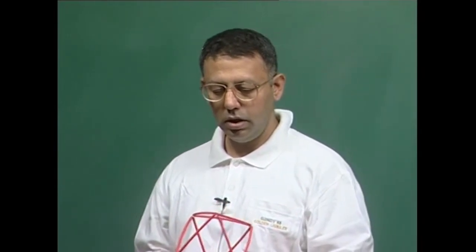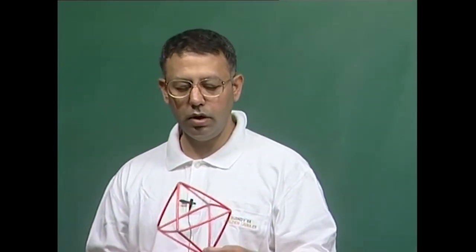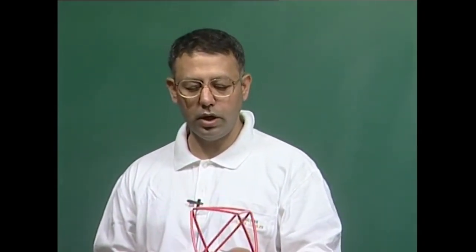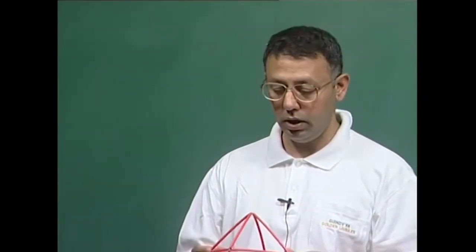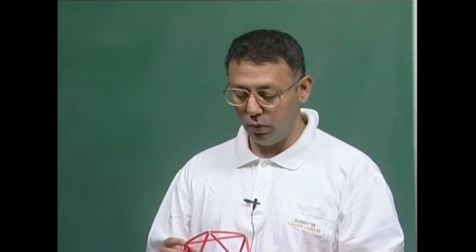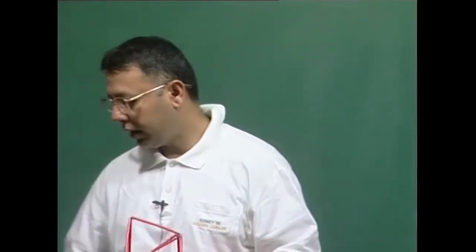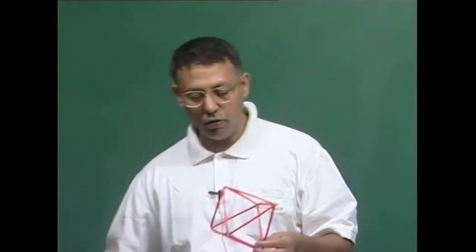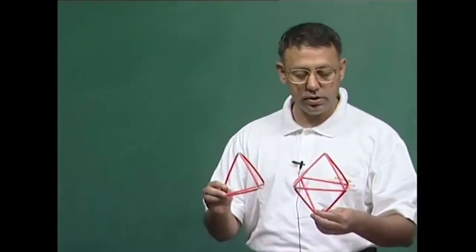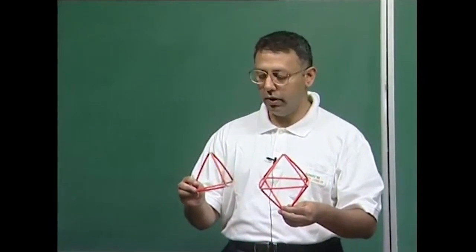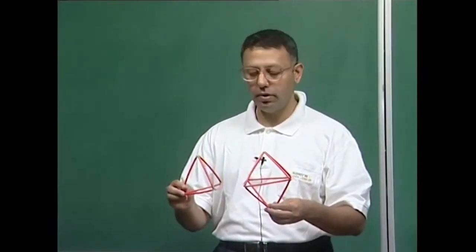Before considering the octahedral and tetrahedral voids in a hexagonal close-packed crystal, let me revise some concepts we learnt regarding octahedral and tetrahedral voids in the cubic close-packed crystal. We saw that there are two kinds of voids of importance: the octahedron and the regular tetrahedron.